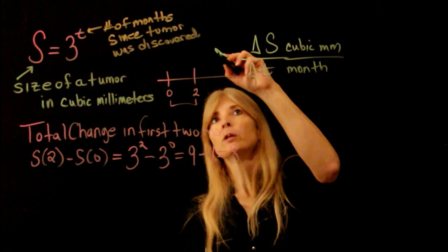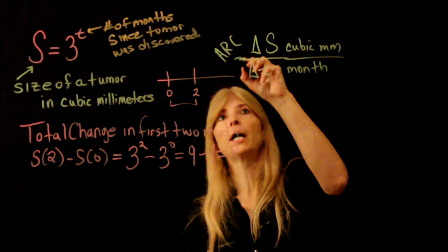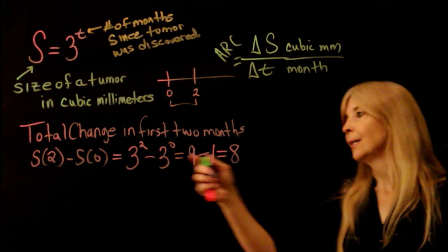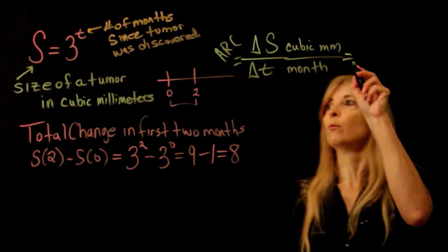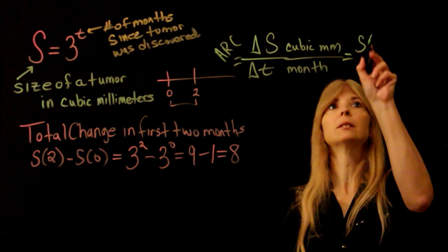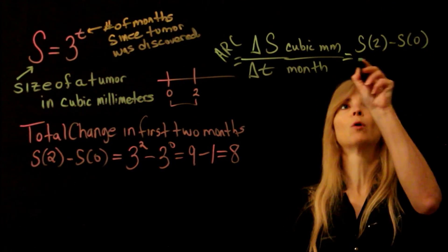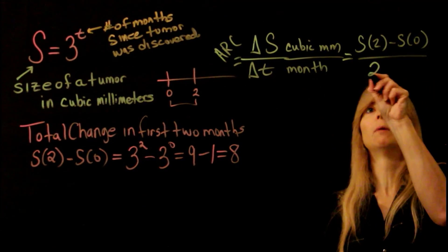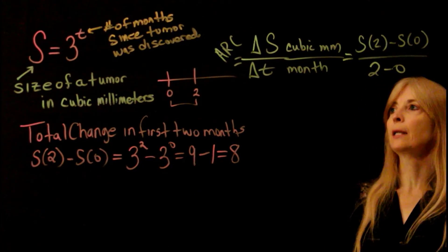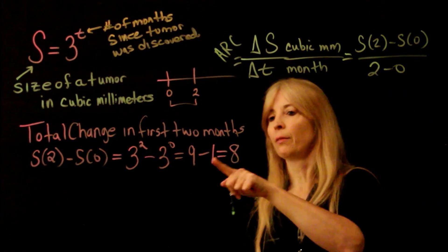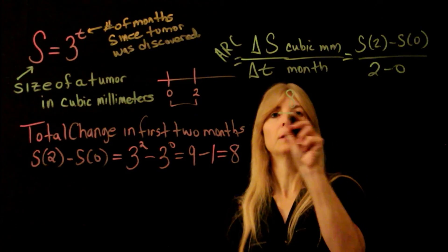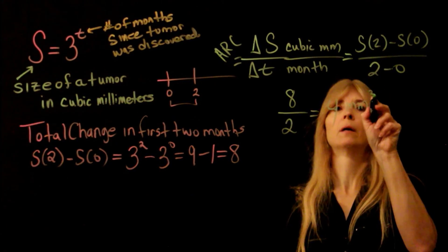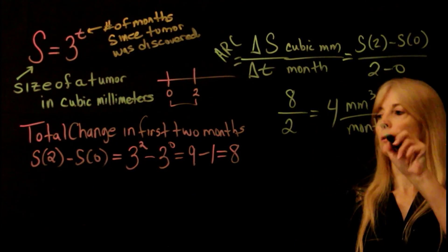So to find the average rate of change the first two months, as you can see it walked you through the first step, this is the numerator. So if I write that, that's my S of 2 minus S of 0. And then the denominator is the change in time, the first two months, which would be 2 minus 0. So we already found this, which would be 8, and then divide it by 2. And we get our 4 cubic millimeters per month.